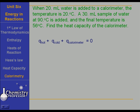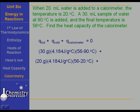The Q for the hot water plus the Q for the cold water plus the Q for the calorimeter must equal zero. The Q for the hot water is 30 grams times 4.184 joules per gram degree Celsius times (56 minus 90) degrees Celsius. The Q for the cold water is 20 grams times 4.184 joules per gram degree Celsius times (56 minus 20) degrees Celsius. Working through very carefully, I found that the Q for the calorimeter was 1,265 joules.